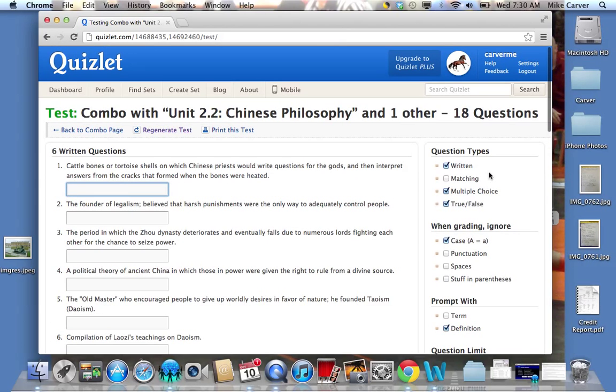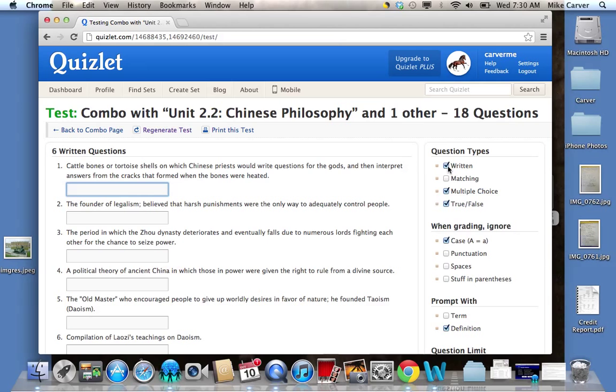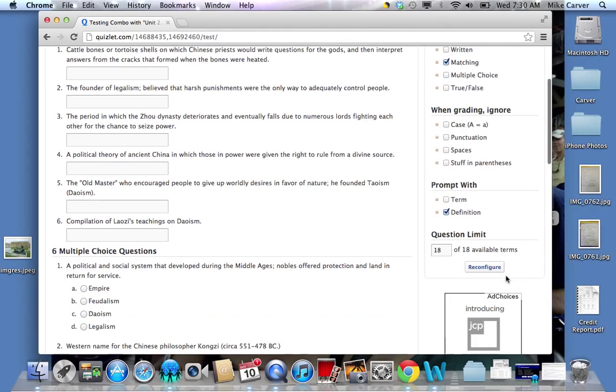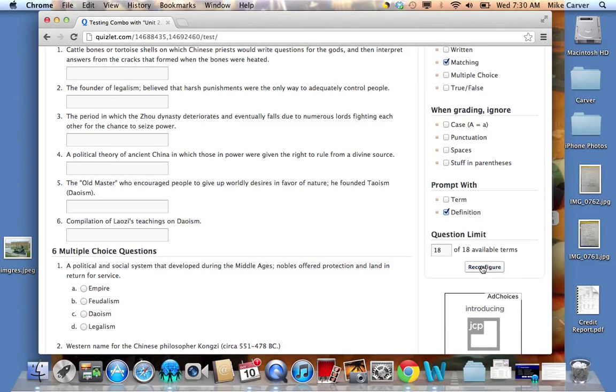So what I need to do is come over to the right-hand side and I see the question types. I want to uncheck Written, Multiple Choice, True, False, and I only want to click Matching. I can uncheck this. I only want to be graded on the questions I get right. And then I need to click Reconfigure.